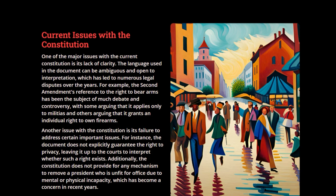Another issue is the constitution's failure to address certain important issues. For instance, the document does not explicitly guarantee the right to privacy, leaving it to the courts to interpret whether that right exists. Additionally, the constitution does not provide any mechanism to remove a president who is unfit for office due to mental or physical incapacity, which has become a concern in recent years.